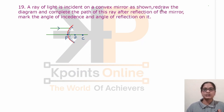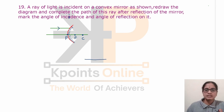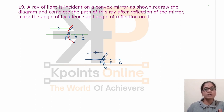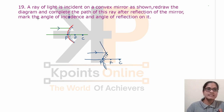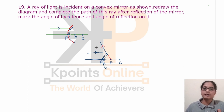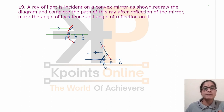A ray of light is incident on a convex mirror as shown. Redraw and complete the path after reflection. This is a convex mirror with pole, principal focus, and center of curvature marked. A parallel ray of light falling on the convex mirror will get reflected so that it appears directed towards the principal focus. According to the rule, a ray parallel to the principal axis reflects from a convex mirror directed towards the principal focus.